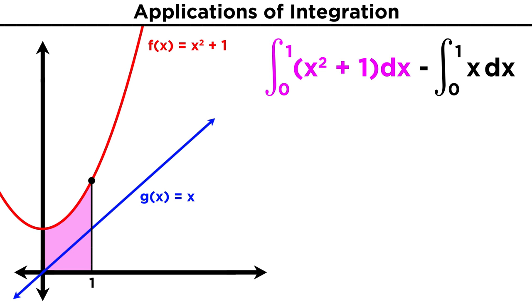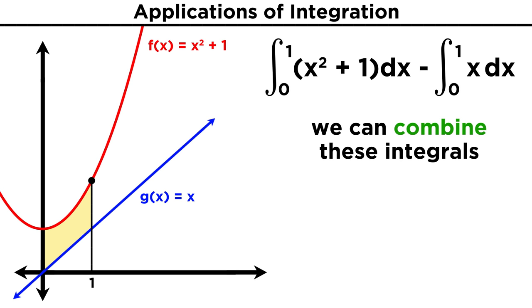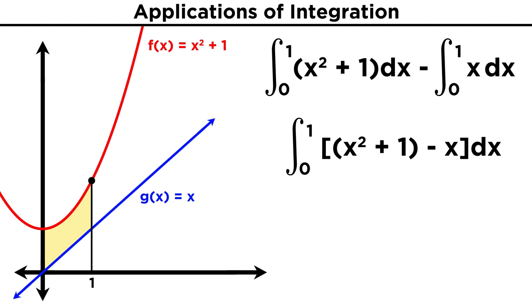Again, that's like taking all of this area and subtracting from it this smaller area, which leaves us with the area in between the curves. Now, we know that the difference of two integrals over the same interval is the same as the integral of the difference of the two functions. So really, we can even just turn this into one integral. Then we just end up with the integral of x squared plus one minus x, or rearranged, x squared minus x plus one.